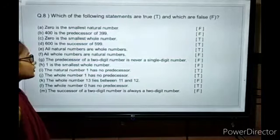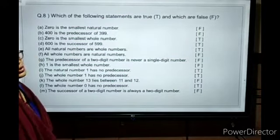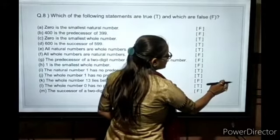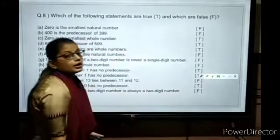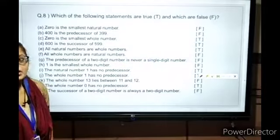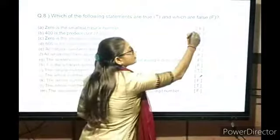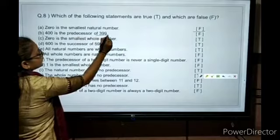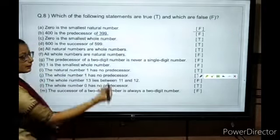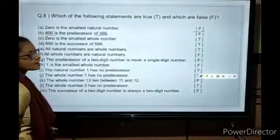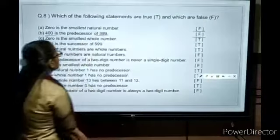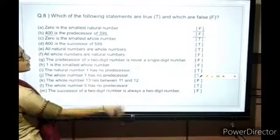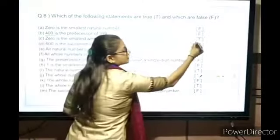Next question: Which of the following statements are true and false? Zero is the smallest natural number - False. Natural numbers start from 1, hence this statement is False. Zero is the smallest whole number - Yes, this statement is True.